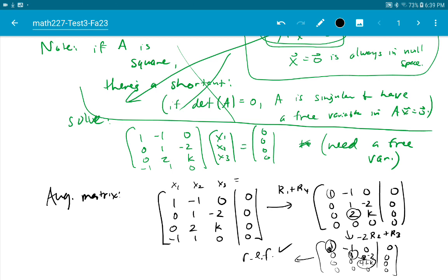So notice, if 4 plus k does not equal 0, we have 3 pivots. No free variables. And then, if you have no free variables, you only have a trivial null space.